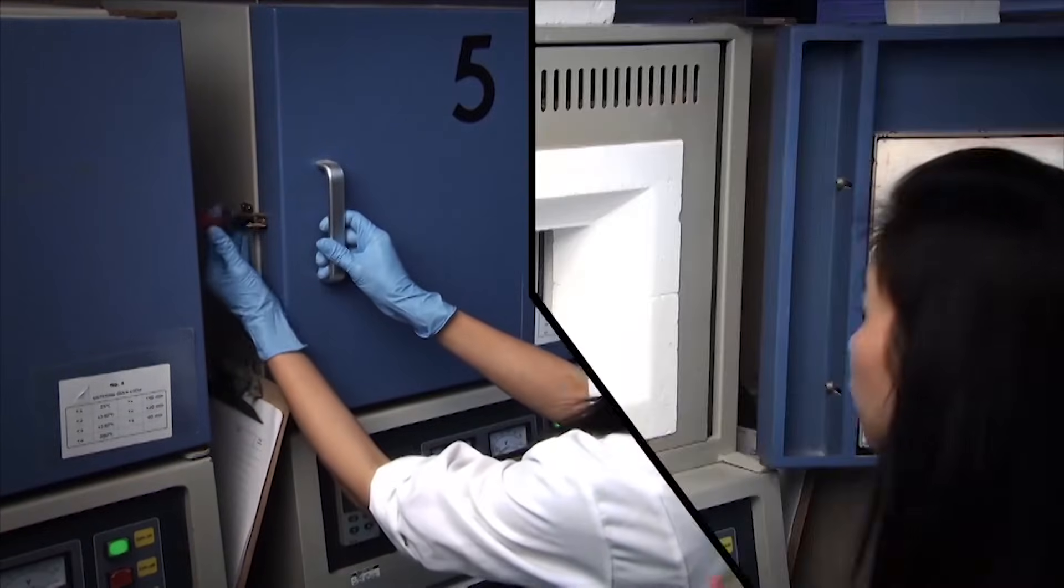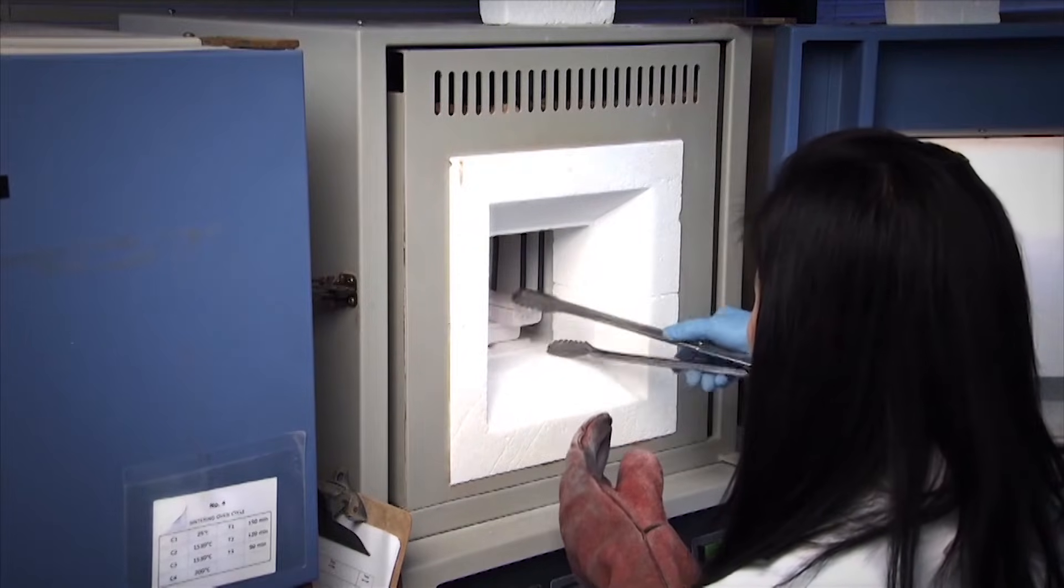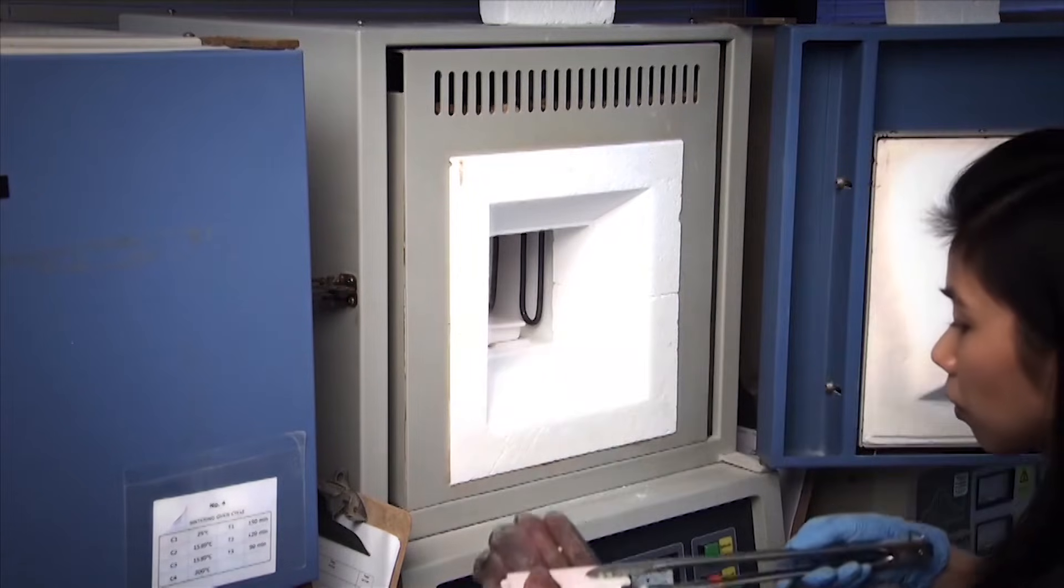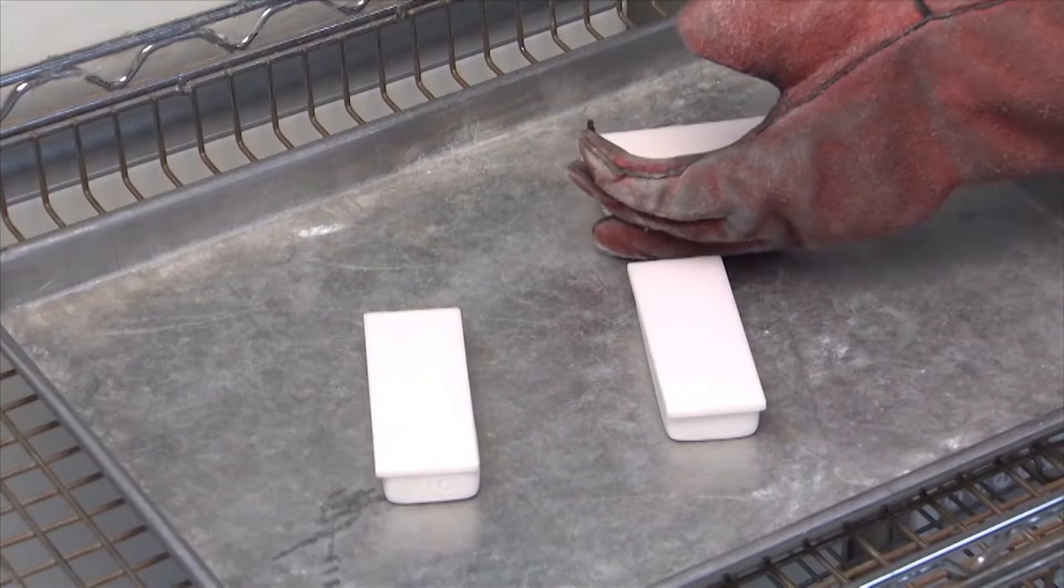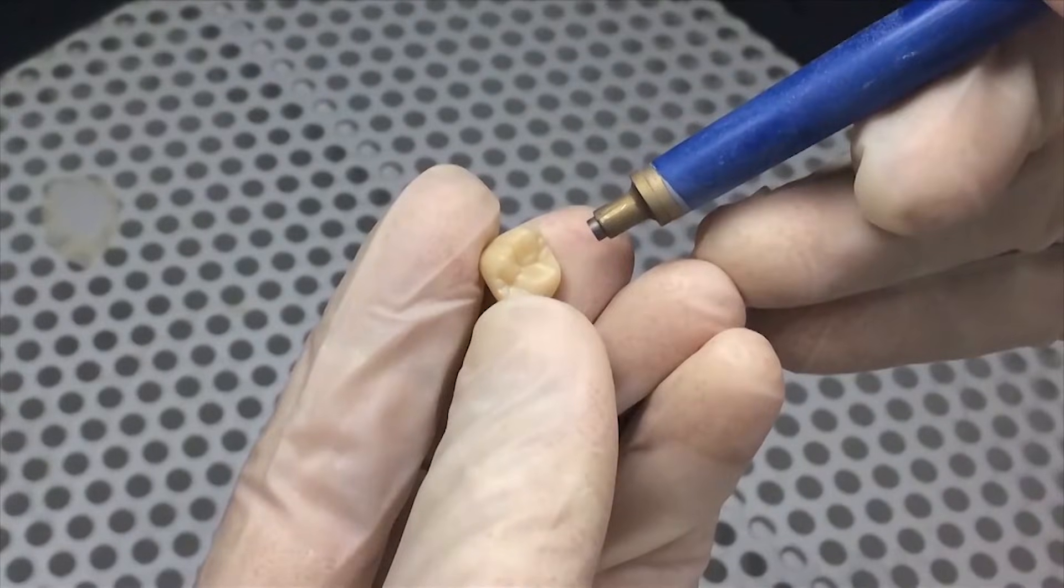So this way, as the crowns shrink during the nine hours sinter, those ball bearings roll underneath the crown. So the crown ends up being exactly the same shape. It just shrinks by 21 to 22% based on the exact enlargement factor for that particular block.